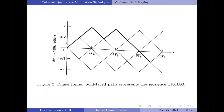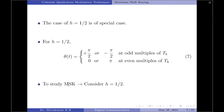Each path from left to right through the trellis corresponds to a specific binary sequence input. For example, the path shown in bold corresponds to the binary sequence 1 1 0 1 0 0 0. Every time there is a symbol 1, the phase increases by +π/2, and every time there is a symbol 0, the phase decreases by −π/2. Therefore, to study the minimum shift keying technique, we will assume h = 1/2 from now onwards.